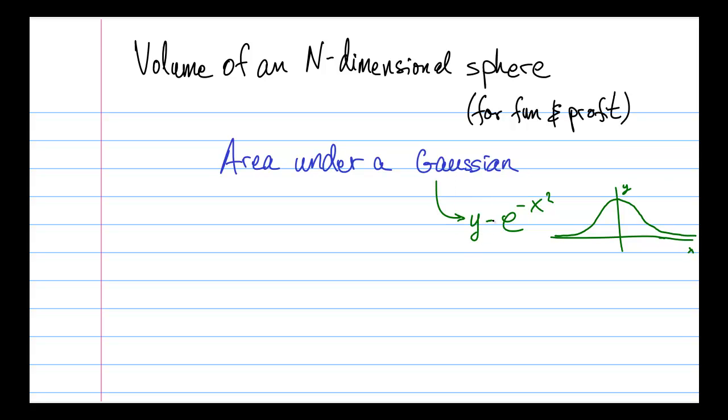So to find the area under the Gaussian, we need to take this integral. We need to integrate e to the minus x squared dx from minus infinity to plus infinity. What is this integral? Well, it's not very easy to figure out.